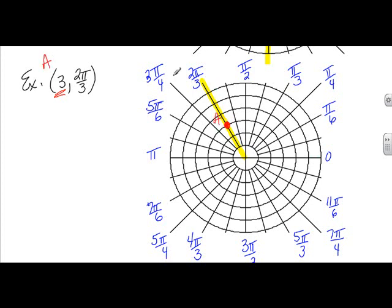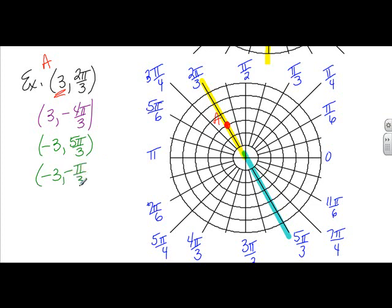Now, what I'd like you to do is stop and think about other ordered pairs you could use to name the same point. The ones that spring to mind for me are (3, -4π/3). So I would think about rotating around -4π/3 and then counting out a distance of 3. Or, if I used a negative value for r, -3, I would need to use the ray that's directly across the circle from the location of our point A. So the angle I could use could be 5π/3. I might use (-3, -π/3). 5π/3 is the positive angle whose terminal side is that blue ray. -π/3 is the negative angle with that same terminal side.